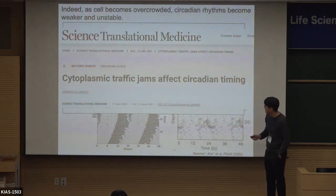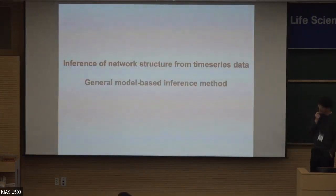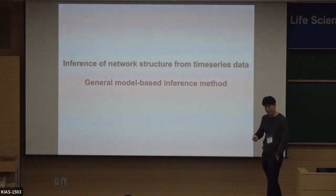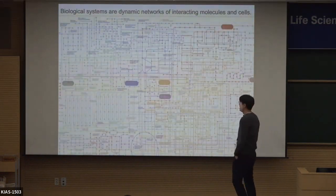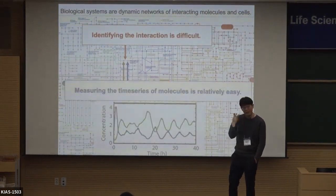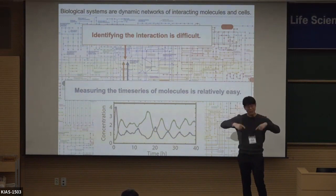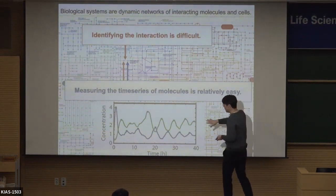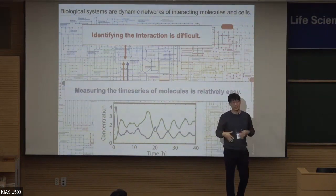Now let me move to my second talk, about inferring network structure from time series data — a reverse engineering problem. Cell is complex, and identifying interactions between specific molecules is experimentally very difficult, taking years. But nowadays, due to experimental advances, measuring concentration changes of specific molecules is easy. So the natural question is: from this time series data, can we determine whether two molecules have any interaction?